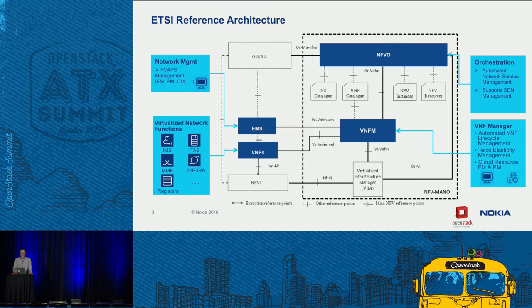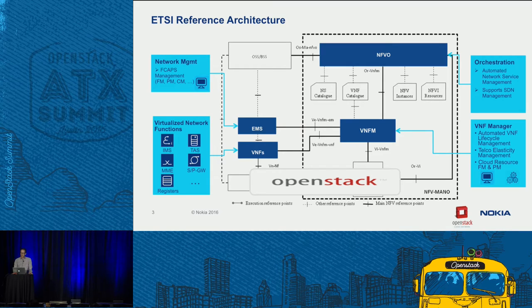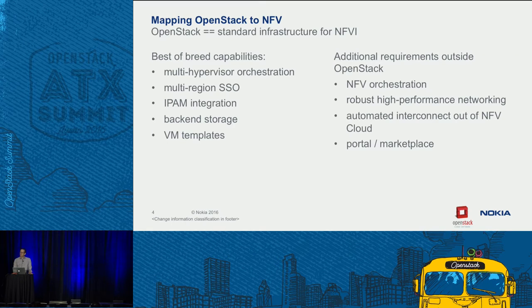So where's OpenStack in all of this? OpenStack sits down at the bottom doing all the heavy lifting and makes the whole thing work. Without OpenStack, we really wouldn't be anywhere. Admittedly there are other options for deploying NFV architectures, but OpenStack is really becoming the standard infrastructure for NFVI, and that's a good thing because it provides a level of commonality and stability you can build interesting things on top of.